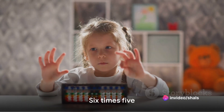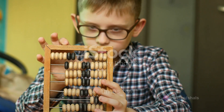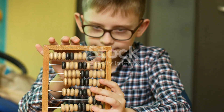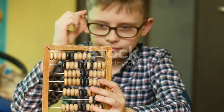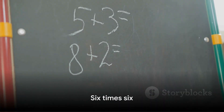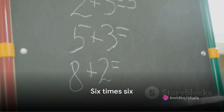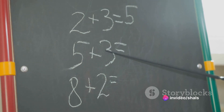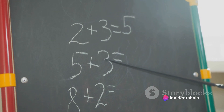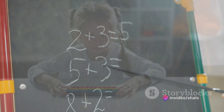Next, we come to six times five, which equals thirty. Picture five groups of six — if you count all the items, you'll realize there are thirty. What about six times six? That equals thirty-six. It's like having six groups of six. Counting each item, you'll have thirty-six in total.